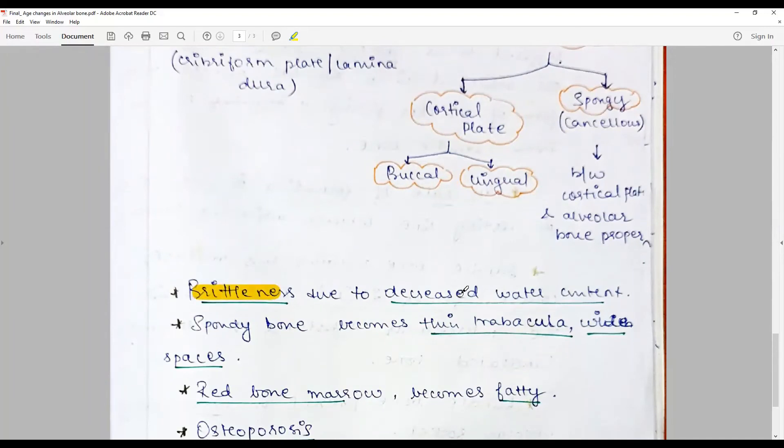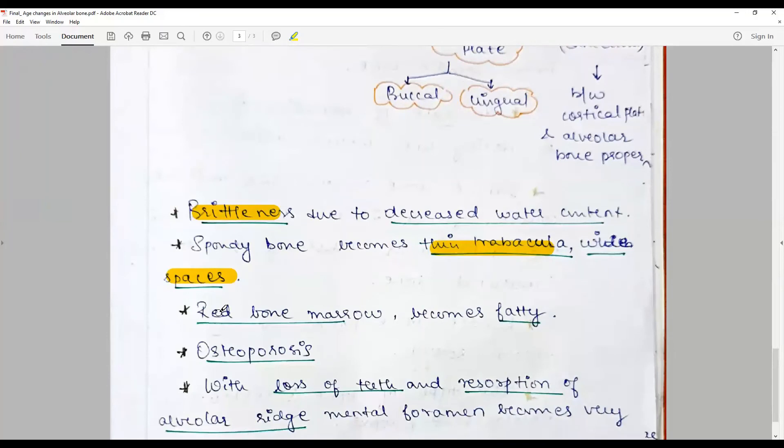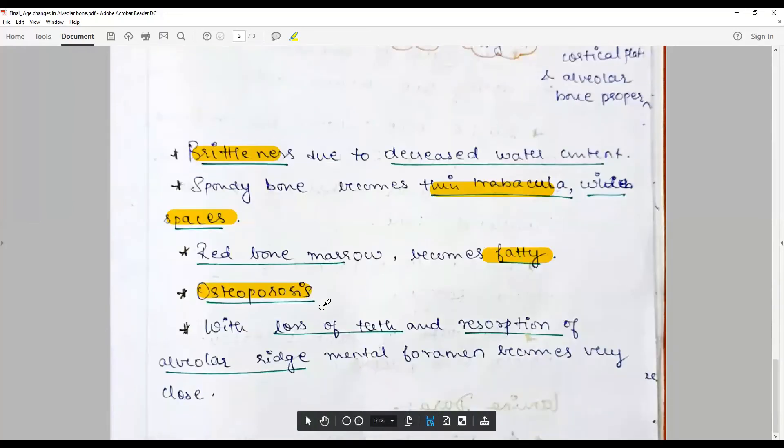And proceeds to say because of all these there is brittleness developing due to the decreased water content. Spongy bone becomes thin trabecular with more spaces while red bone marrow becomes fatty. Increased risk of osteoporosis has to be mentioned, increased risk with the loss of teeth and resorption of alveolar ridge, mental foramen become very close. Though not very elaborative, it conveys the meaning.